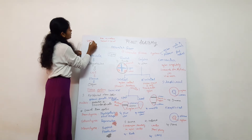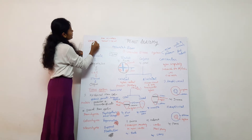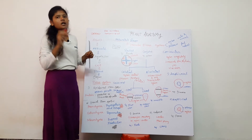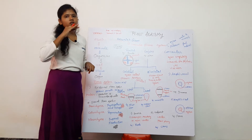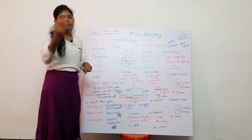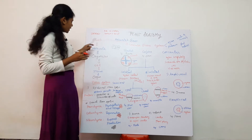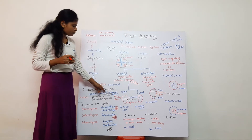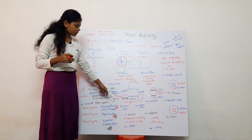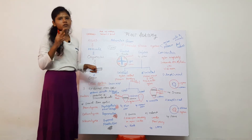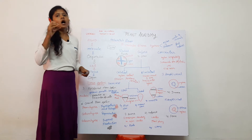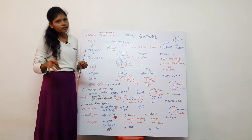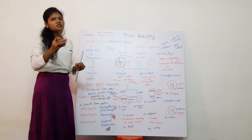The epidermis has a cuticle, which prevents water loss by evaporation. The root epidermis absorbs water and minerals from the soil.